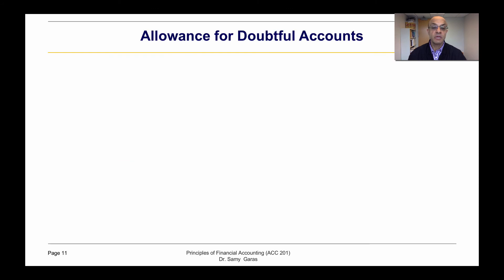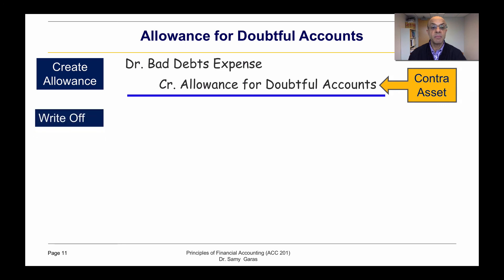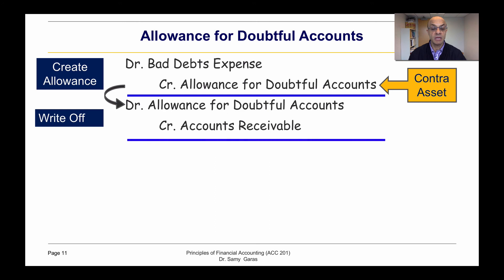First of all, how to create the allowance for doubtful accounts: we usually debit bad debt expense and credit allowance for doubtful accounts. The allowance account is a contra asset, where we put it in the asset section as a minus. Then if we decide to write off any amount, we debit the allowance and credit accounts receivable.